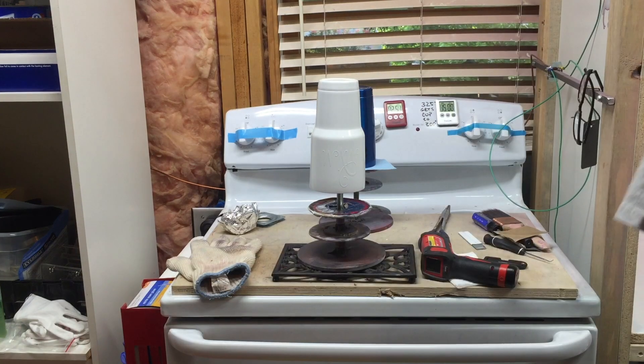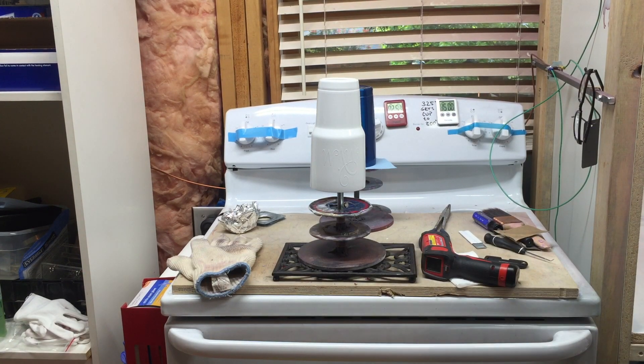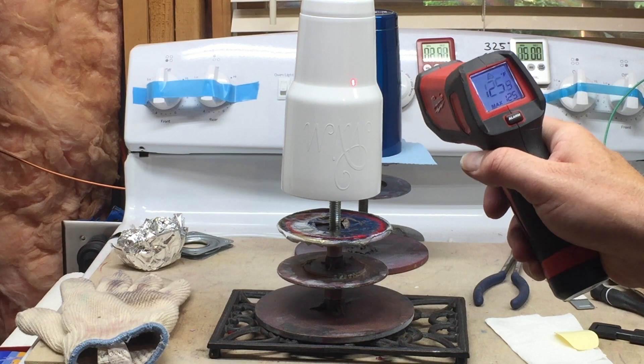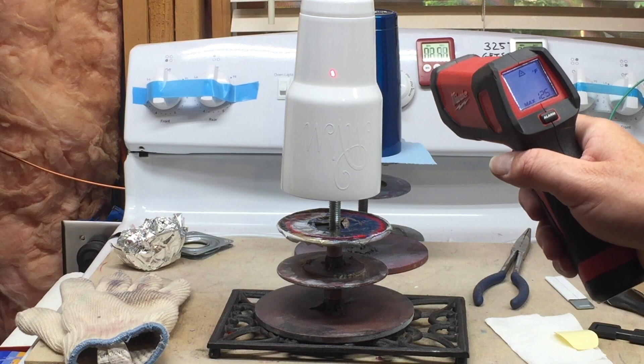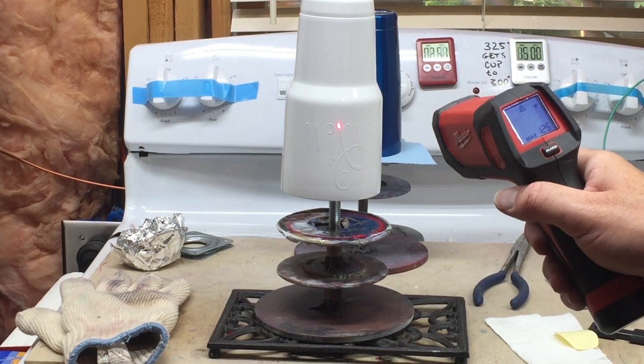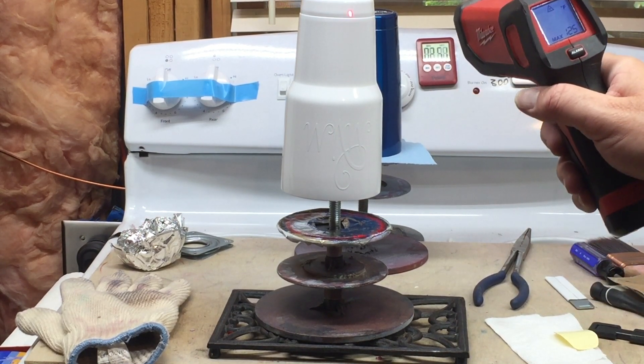Our two and a half minutes is up. We're going to take the tumbler out of the oven. And we're going to check the temperature. When it gets down below about 125, we're going to go ahead and remove the vinyl monogram in the Samantha font.